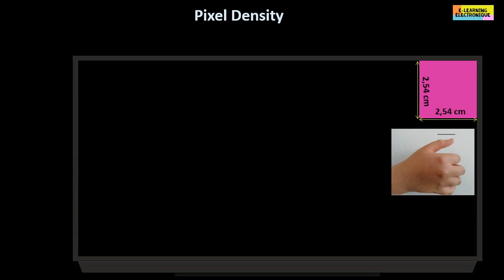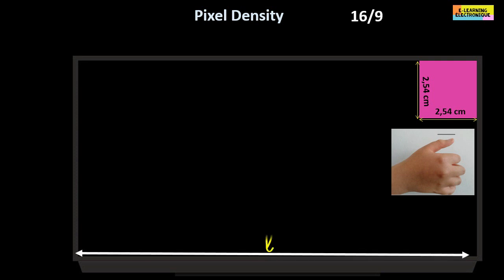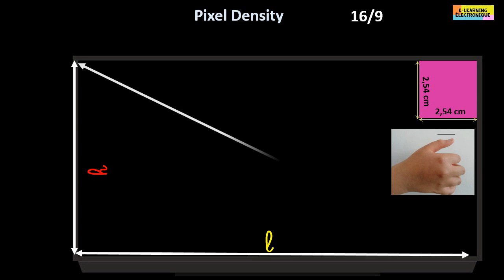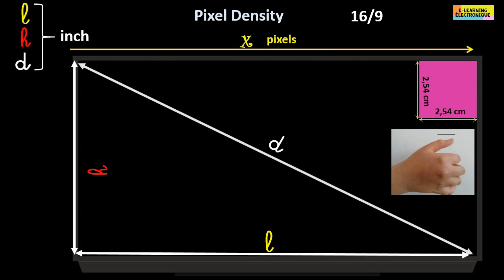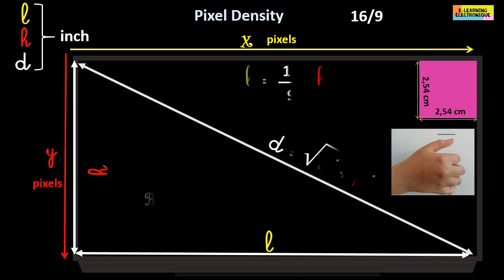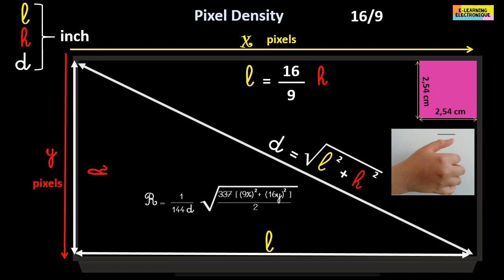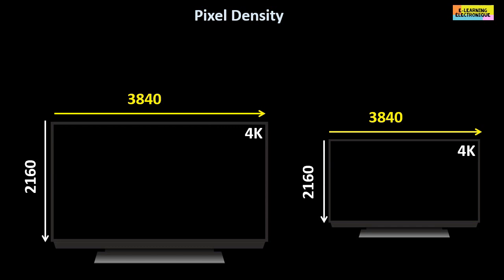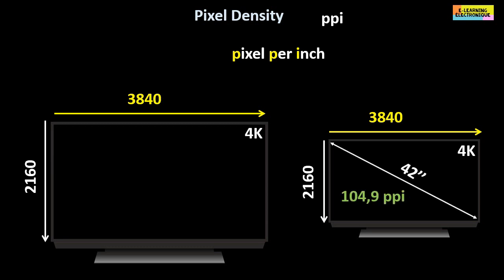To know the pixel density of a 16:9 format screen, you need to know the width L, the height H, the diagonal D, and the display resolution — X pixels across the width and Y pixels on the height. We introduce all these values into a mathematical formula that determines the pixel density value. The result is denoted by the abbreviation PPI, which stands for pixels per inch. In this example, a 42-inch screen has a pixel density of 104 pixels per inch.